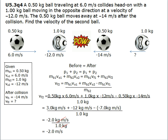Finally, we're left with negative 2 kilogram meters per second over 1 kilogram. The kilograms cancel out and we're left with negative 2 meters per second.